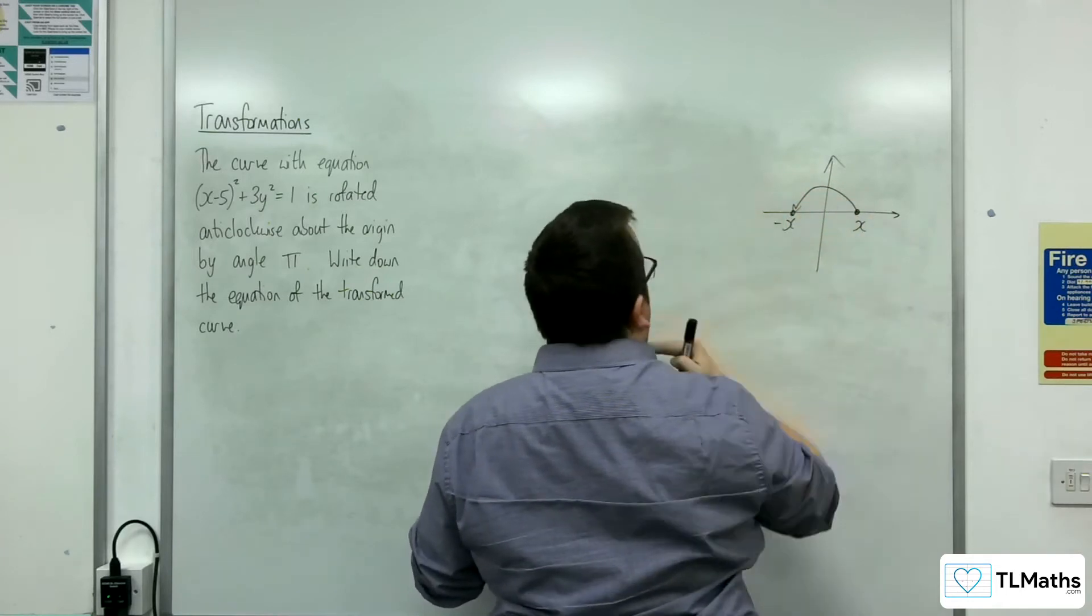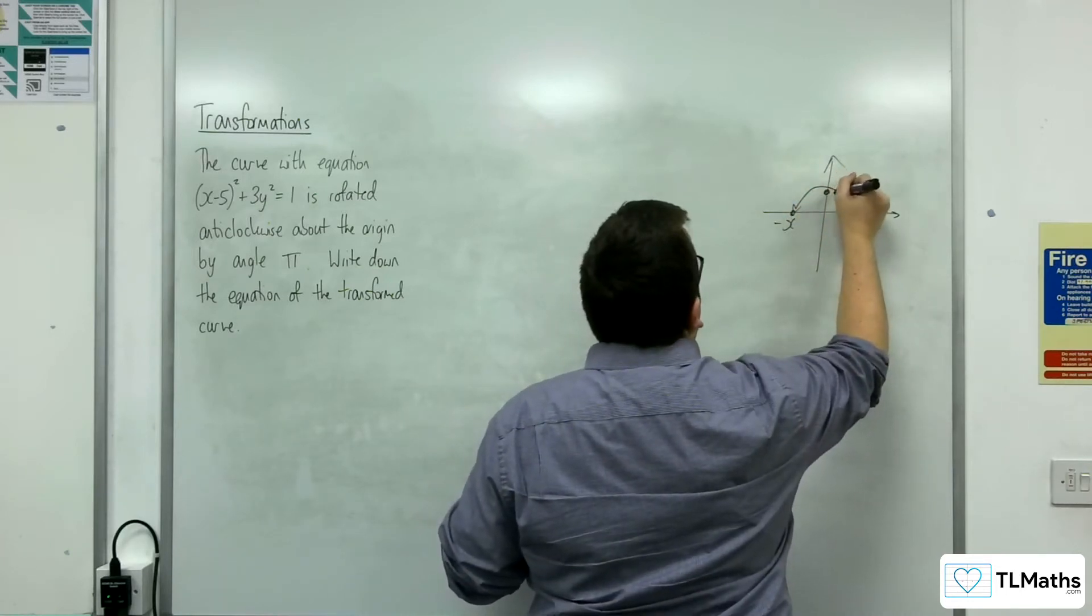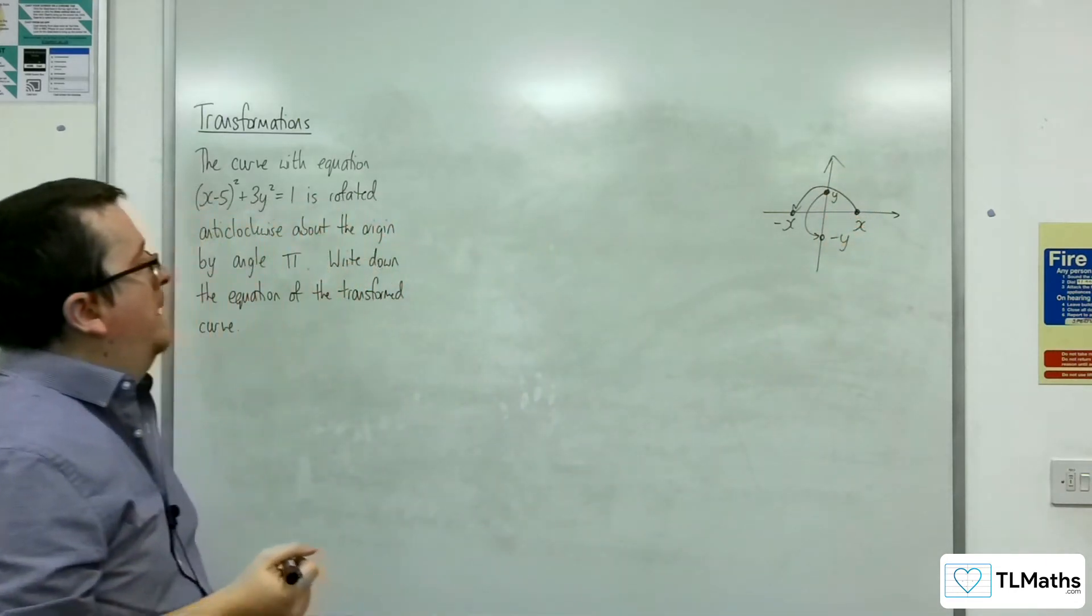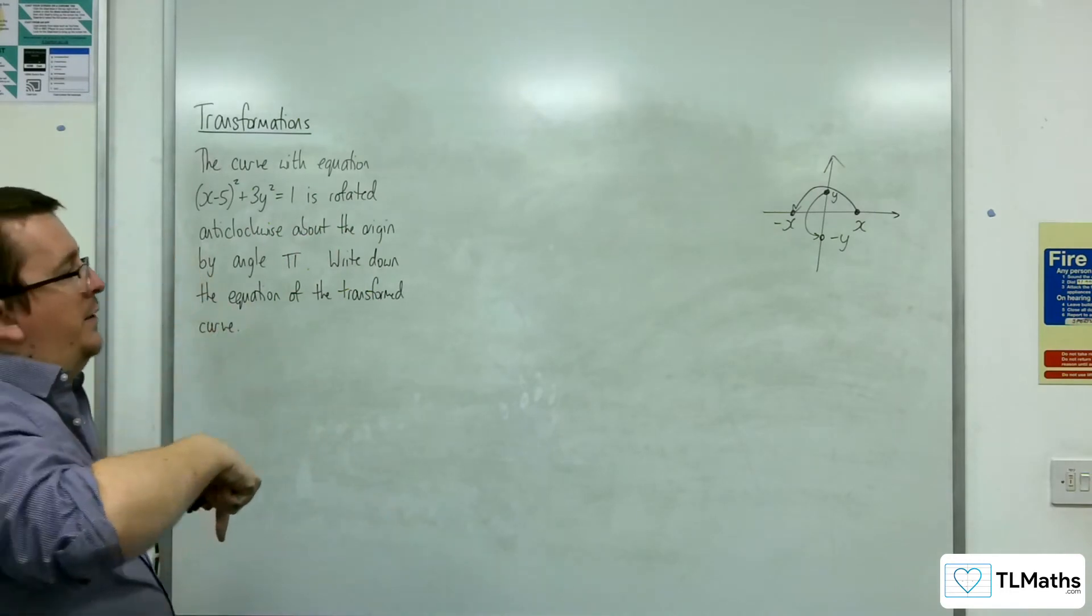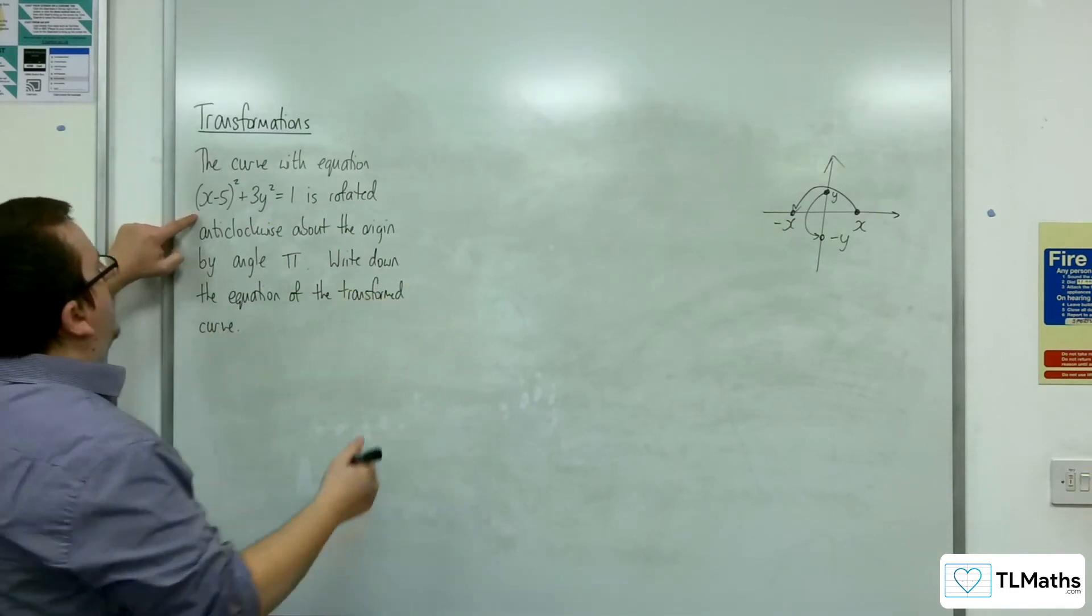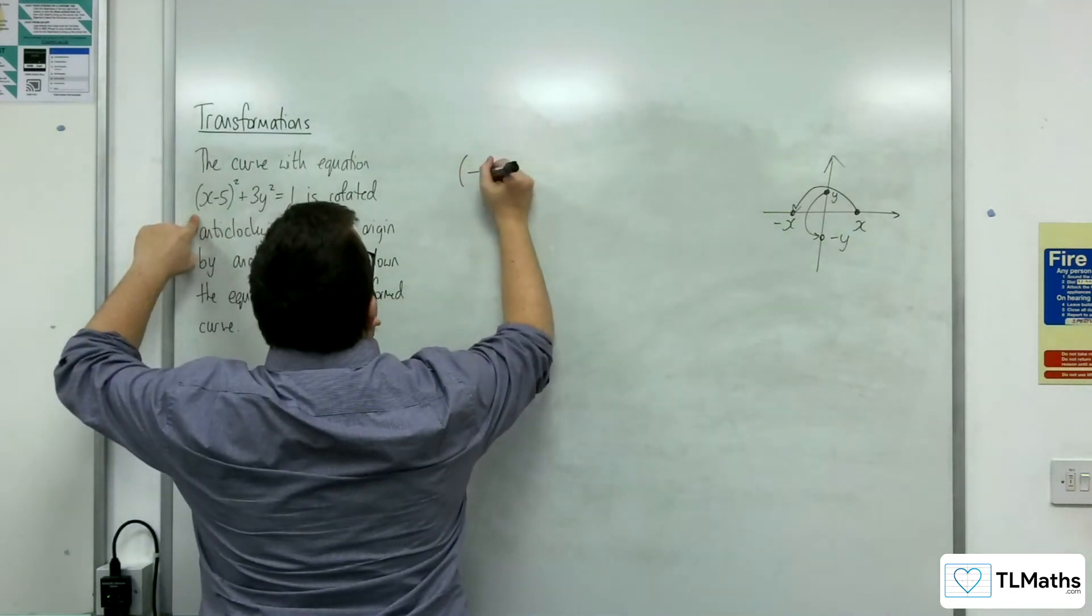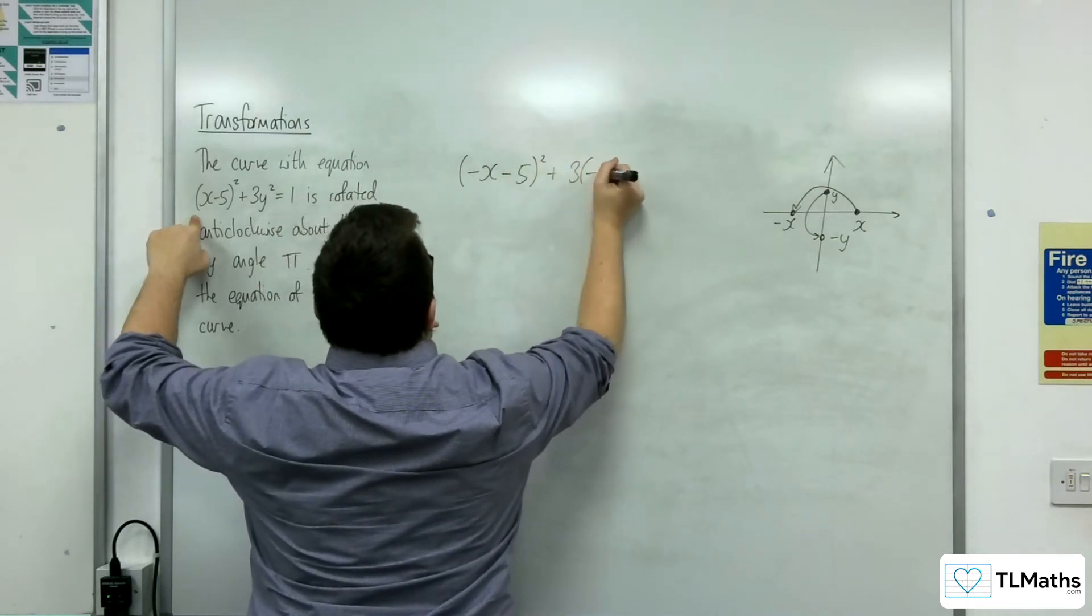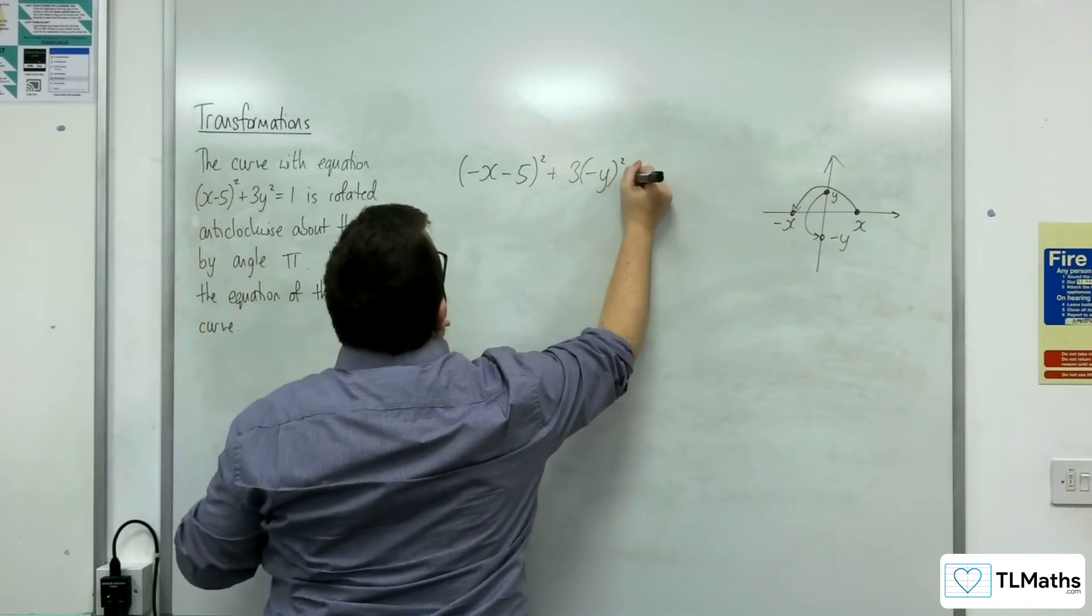So x is replaced with -x and y is going to come down here and be replaced with -y. So x is replaced with -x, y is replaced with -y. So I would have (-x - 5)² + 3(-y)² = 1.